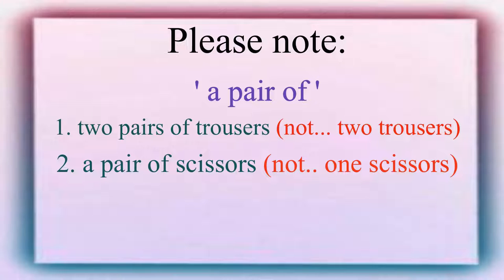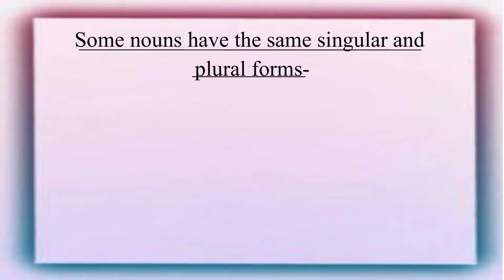A pair of scissors, not one scissors. Some nouns have the same singular and plural forms. Examples: hair, deer, sheep.